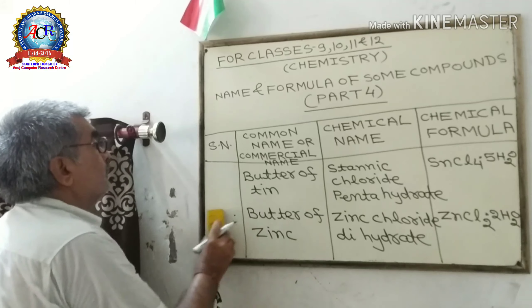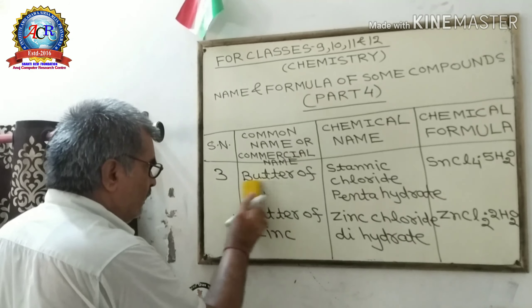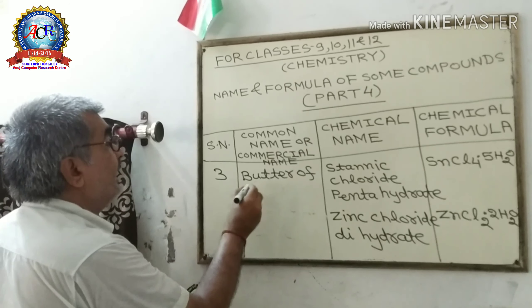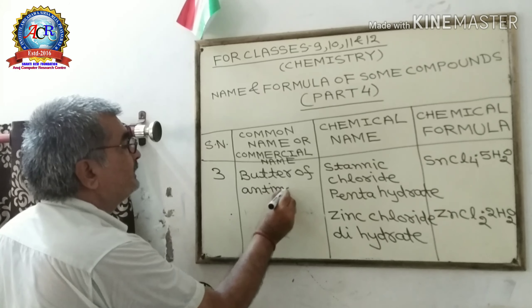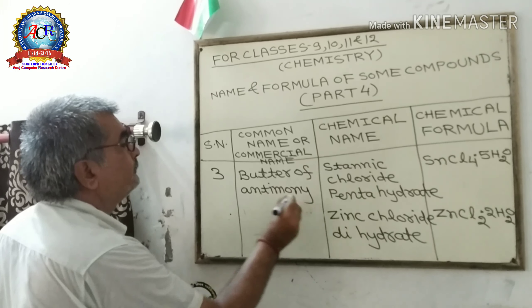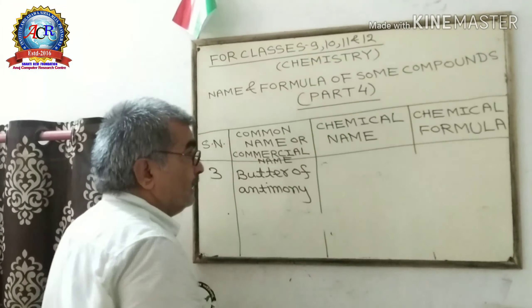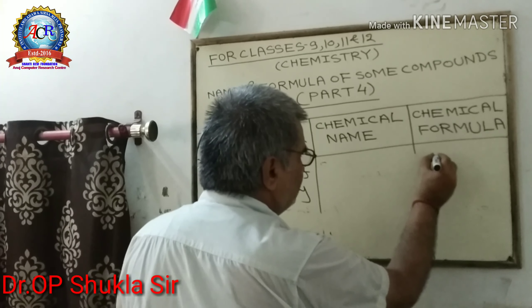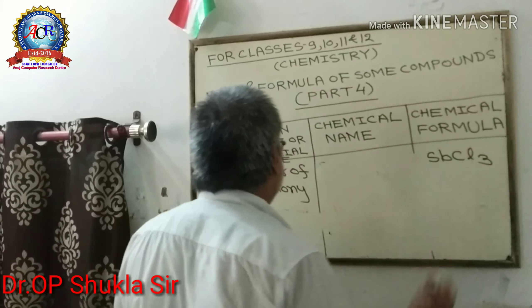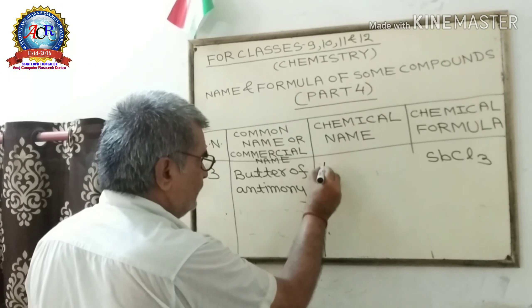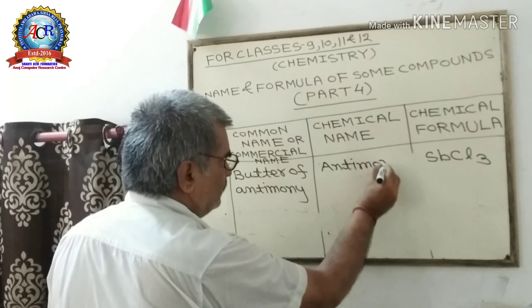Third: Butter of Antimony. This is the commercial name. Its chemical formula is SbCl₃. Its chemical name is Antimony Trichloride.